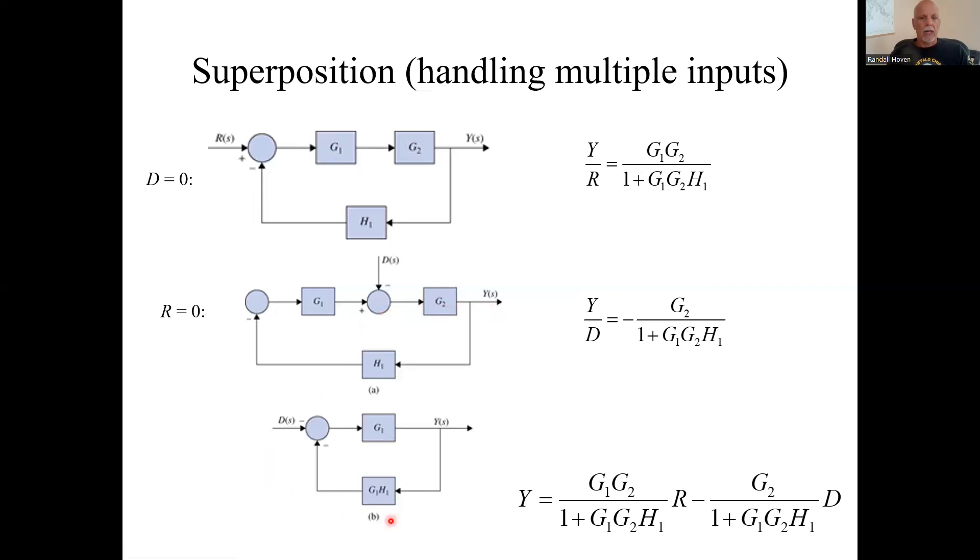And we have, this is the equivalent of G1 times H1 coming through here but negative, and D goes into a G2. Something's missing here. I think that should be a G2. Block diagrams wrong. This should be G sub 2, not G sub 1.